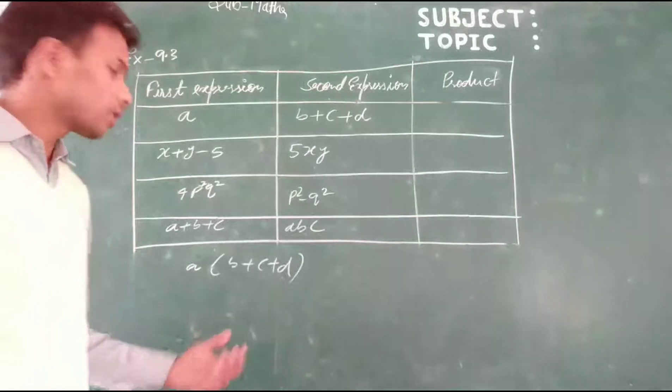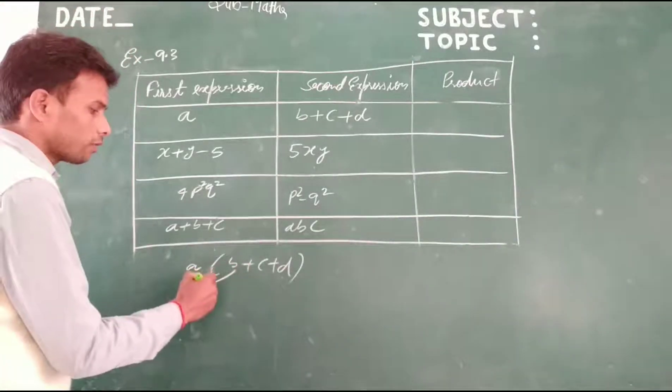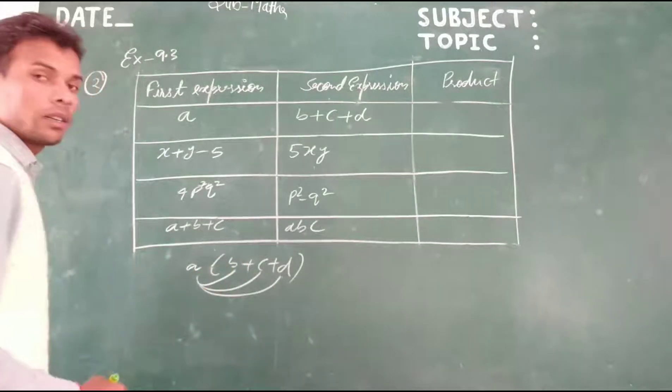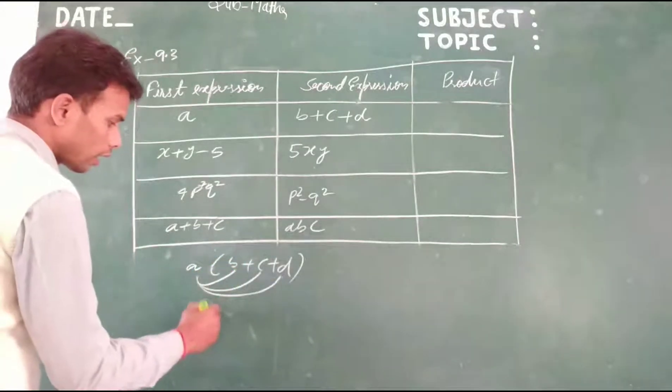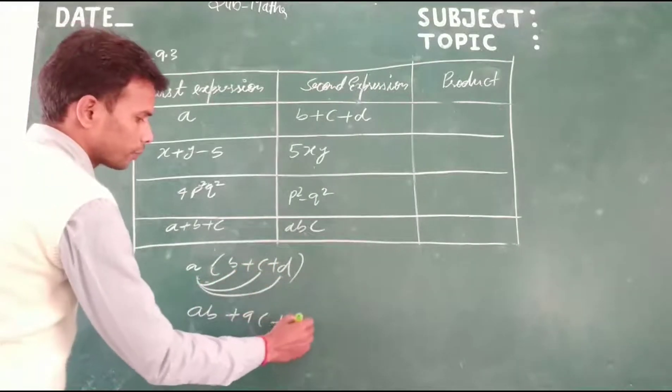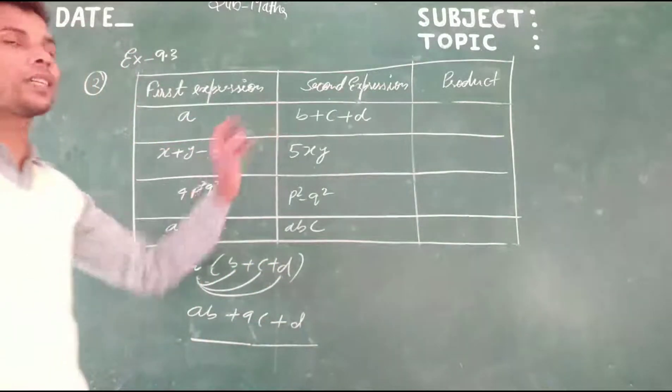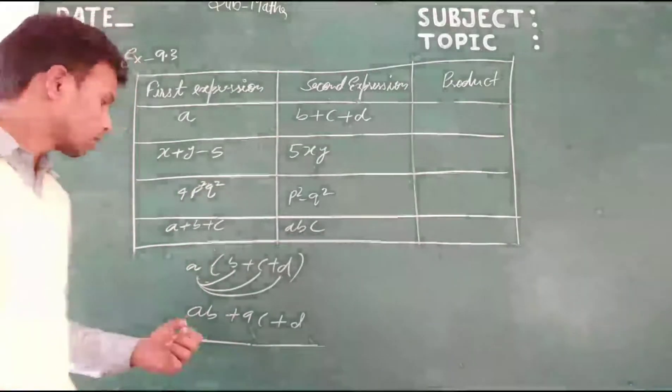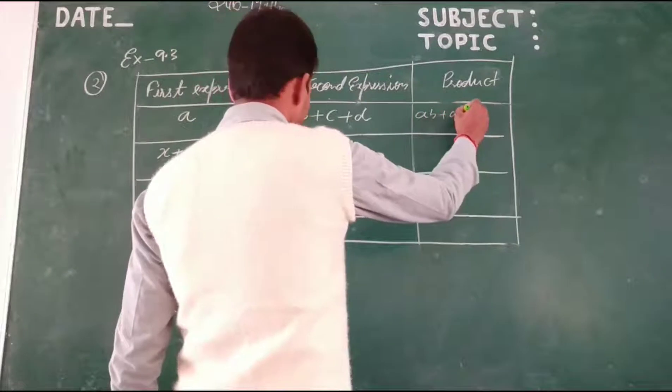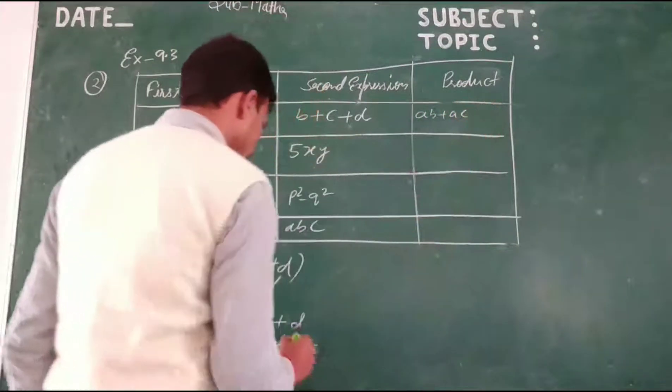The method is: first term to first term, first term to second term, first term to third term. A times B equals AB, A times C equals AC, and A times D equals AD. This is the product of first expression and second expression: AB plus AC plus AD.